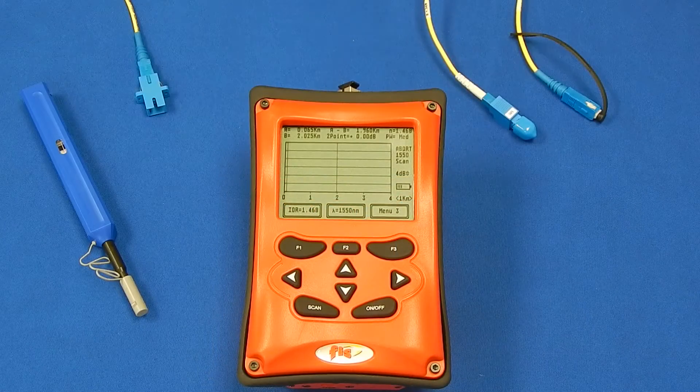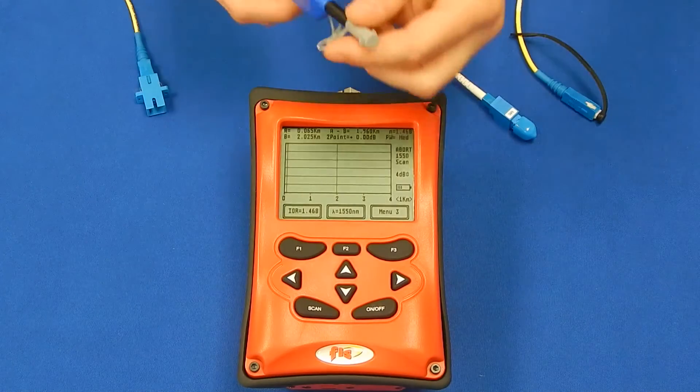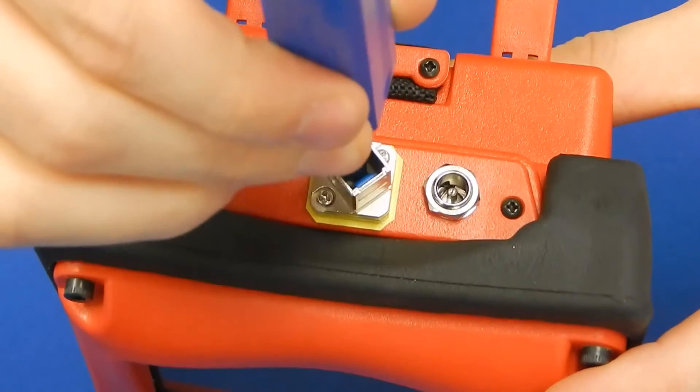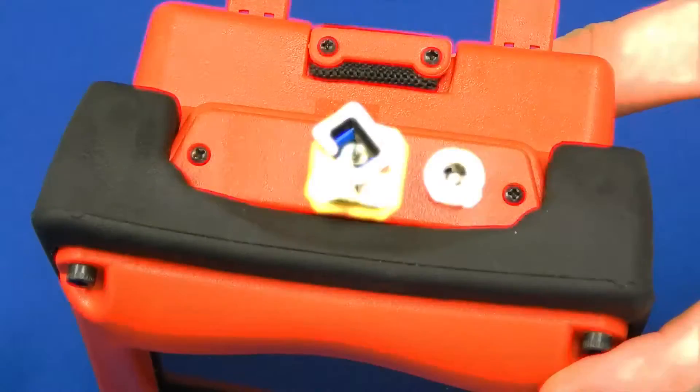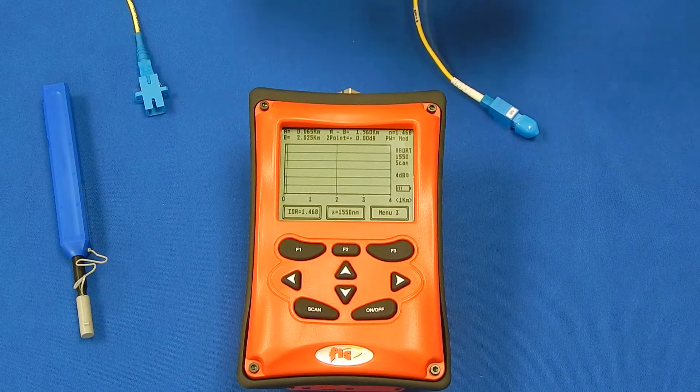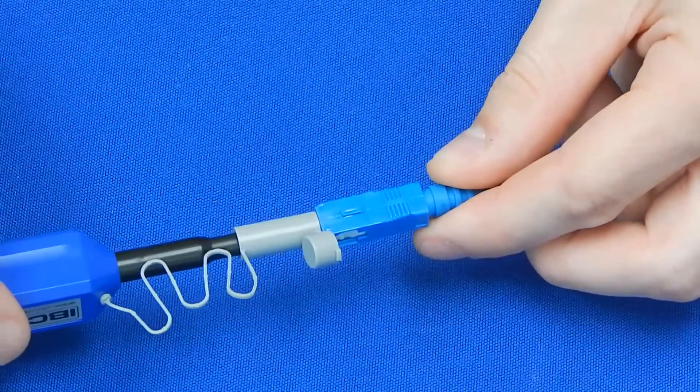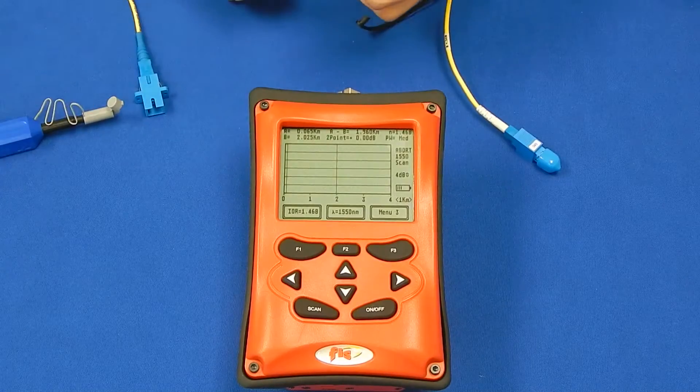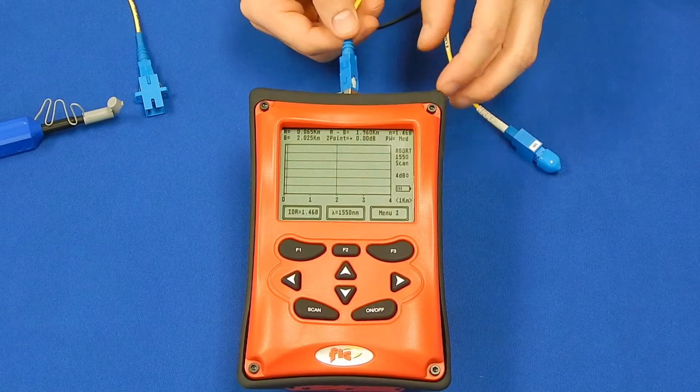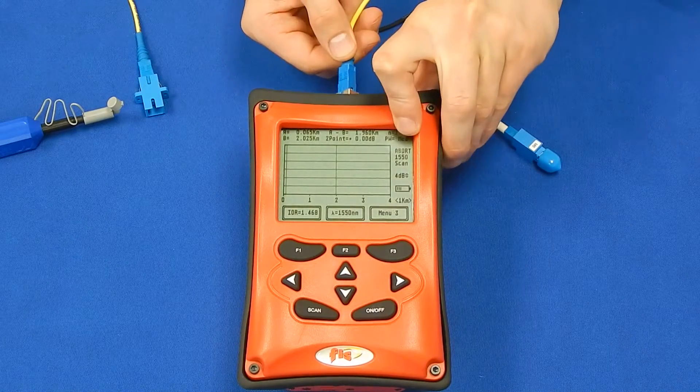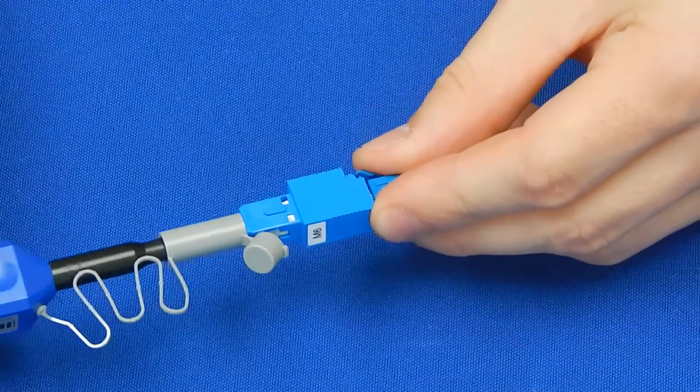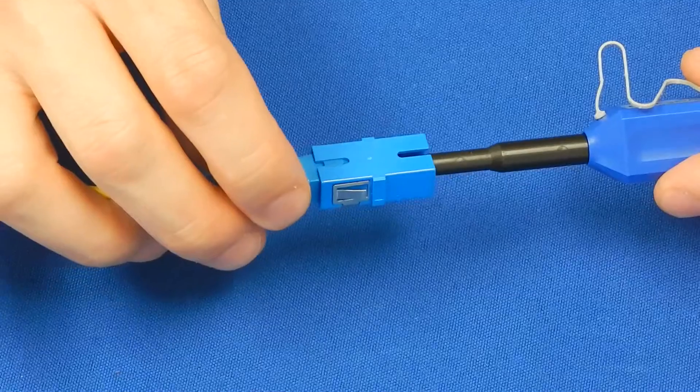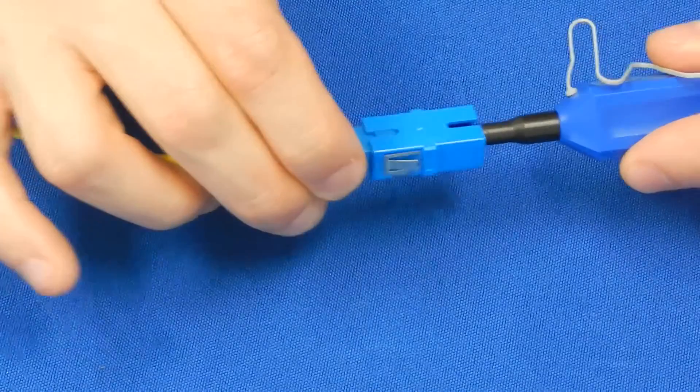When using your OTDR, it is important to keep all ports and connectors clean before plugging in to test. Be sure to clean the OTDR port, the pulse box connectors, and the first connector in the fiber under test.